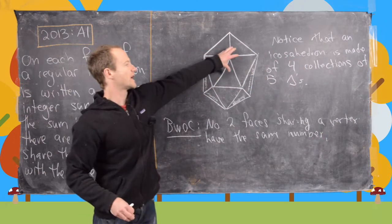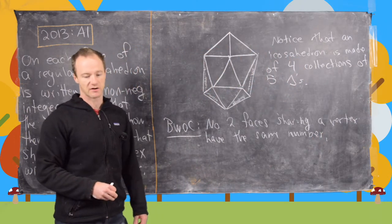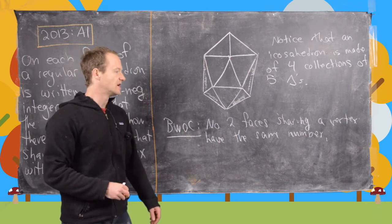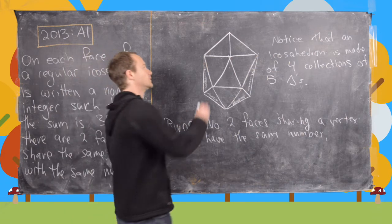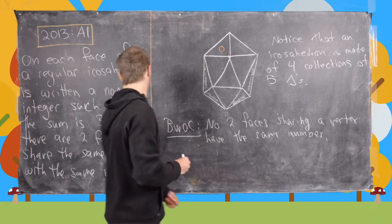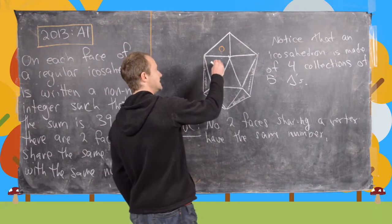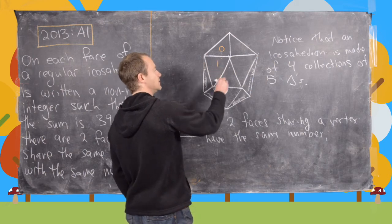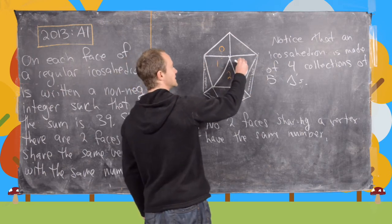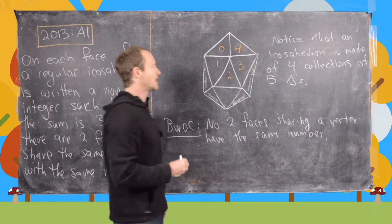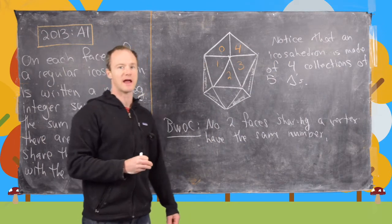So for example, here we have five faces that share a vertex. And so if they don't share the same number, it means we can give one of them the number zero. Notice we have non-negative integers, so we can include zero. Then that means this one's not allowed to be zero. It can be one, this one two, this one three, and this one four. And that's the smallest we can make that sum.